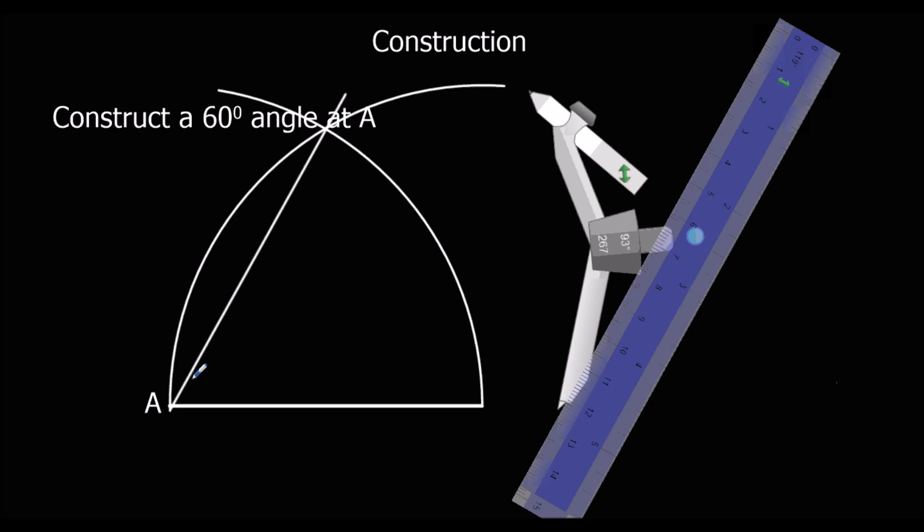What we've done here is we've constructed this angle here is a 60-degree angle. If I joined it up again here, I'll create two more 60-degree angles. But we only needed one.